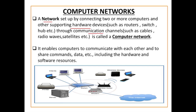Through communication channels, you connect through cables, wired connections, wireless, radio waves, and satellites. When you connect two or more computers using hardware devices like routers, switches, gateways, and hubs, and using communication channels like cables, radio waves, and satellites, it is called a computer network. It enables computers to communicate with each other.